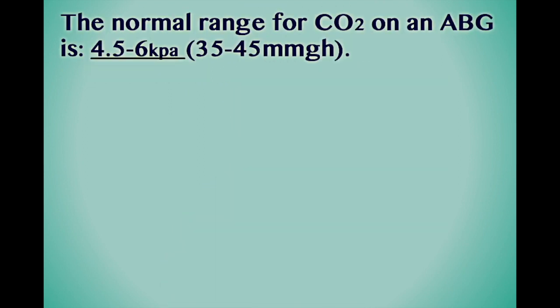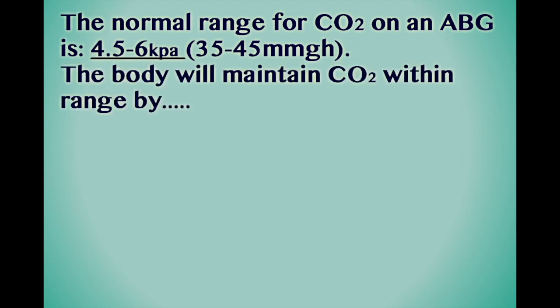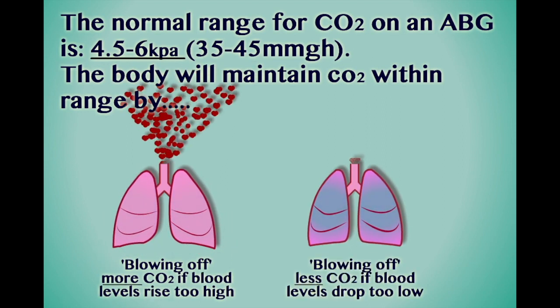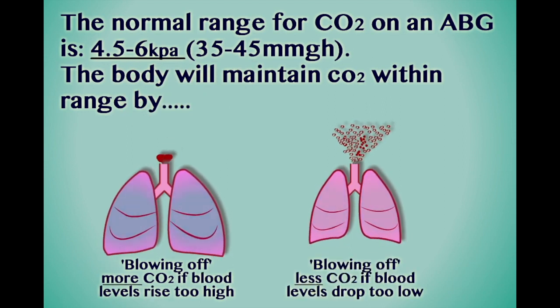The normal range for CO2 in an ABG is between 4.5 to 6 kilopascals. In most circumstances, the body will attempt to keep blood CO2 levels within this range, by either increasing the effort put into expiration when CO2 levels rise too high, or reducing the effort put into expiration if levels become too low.